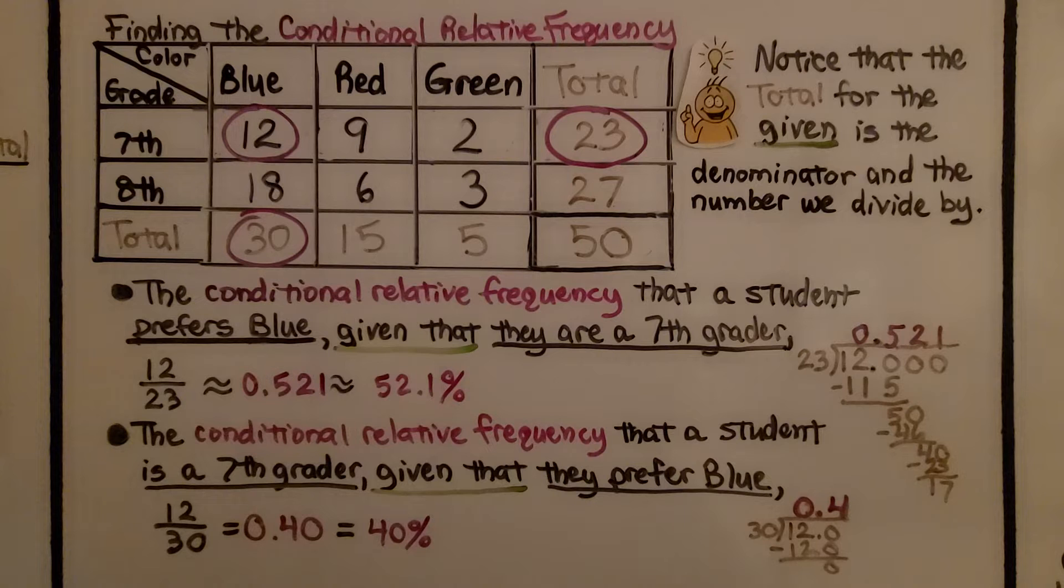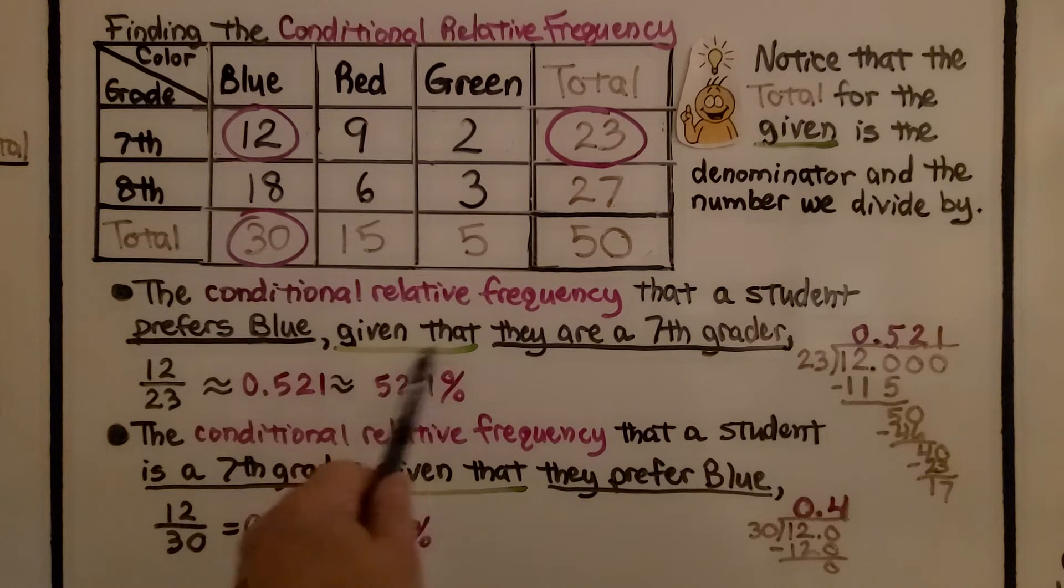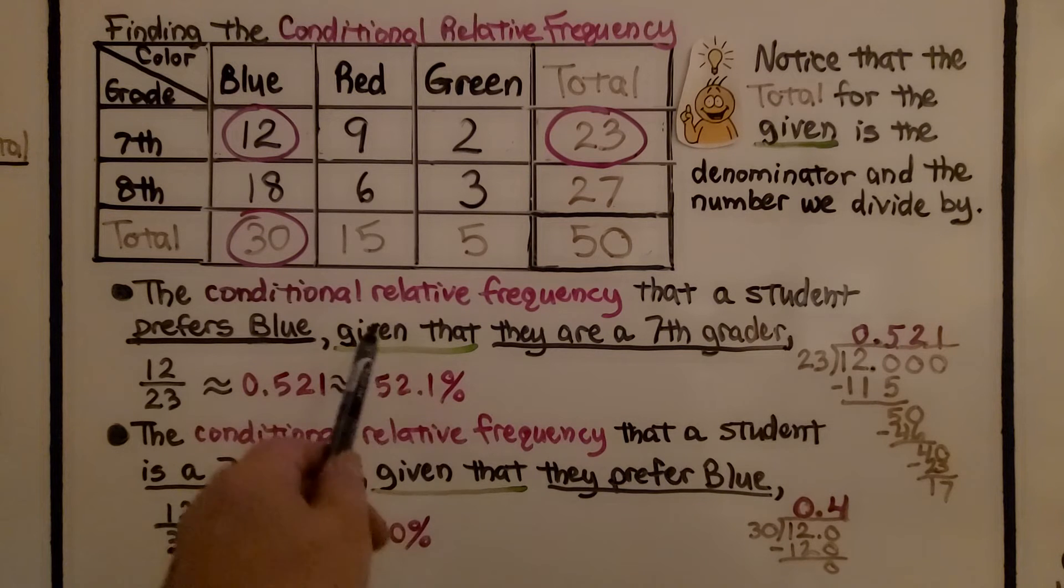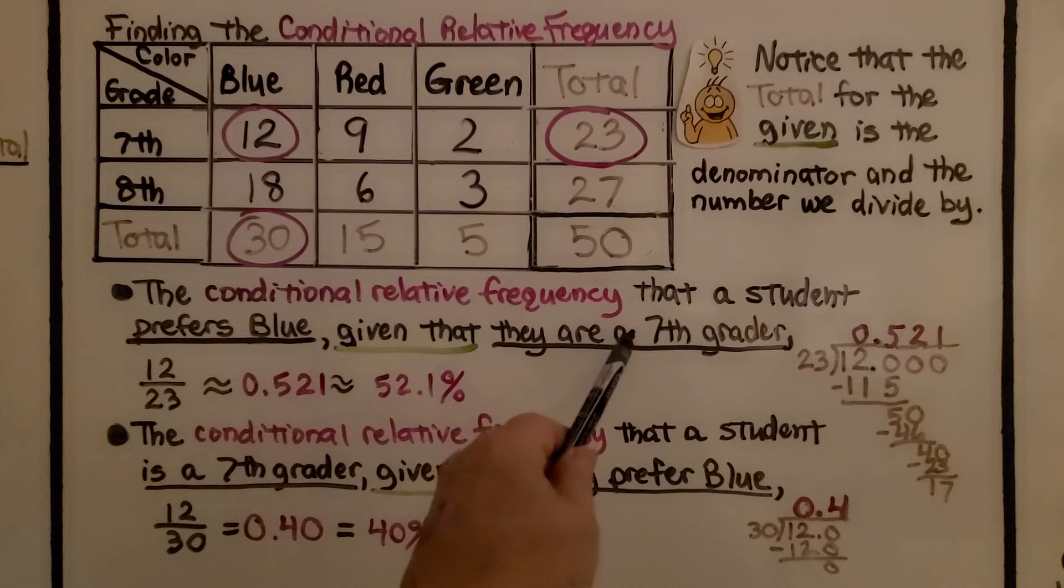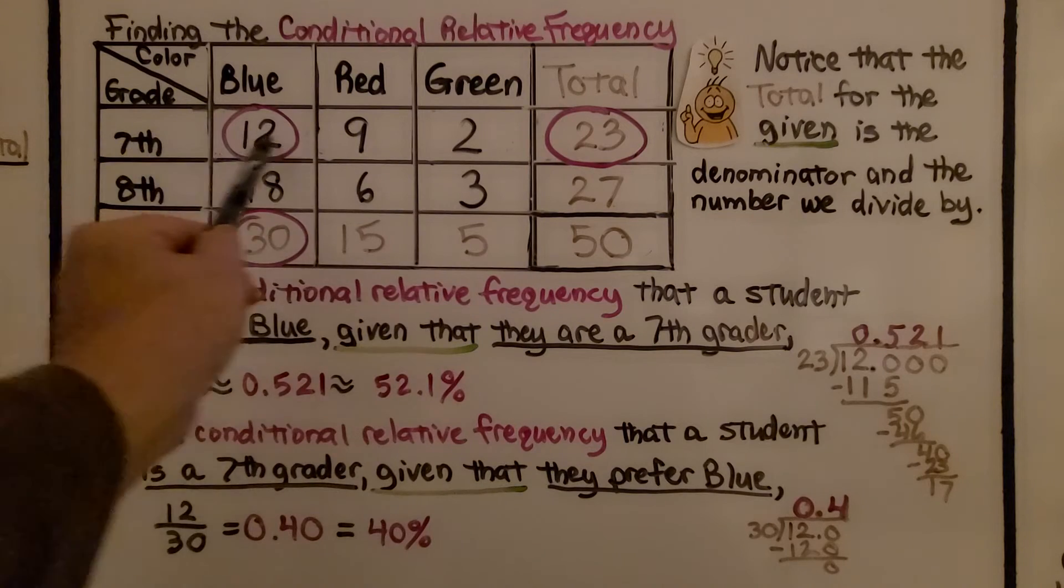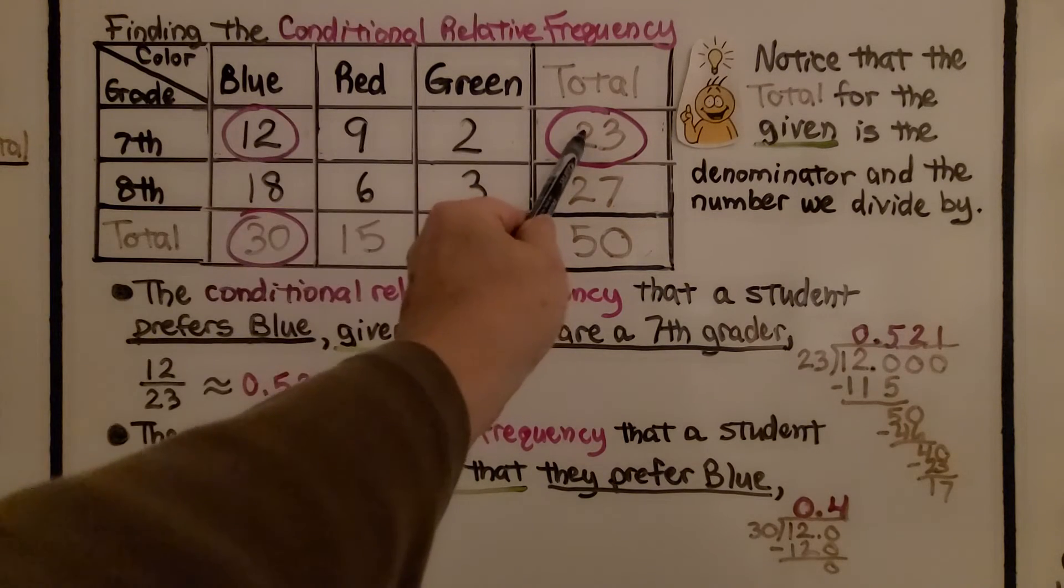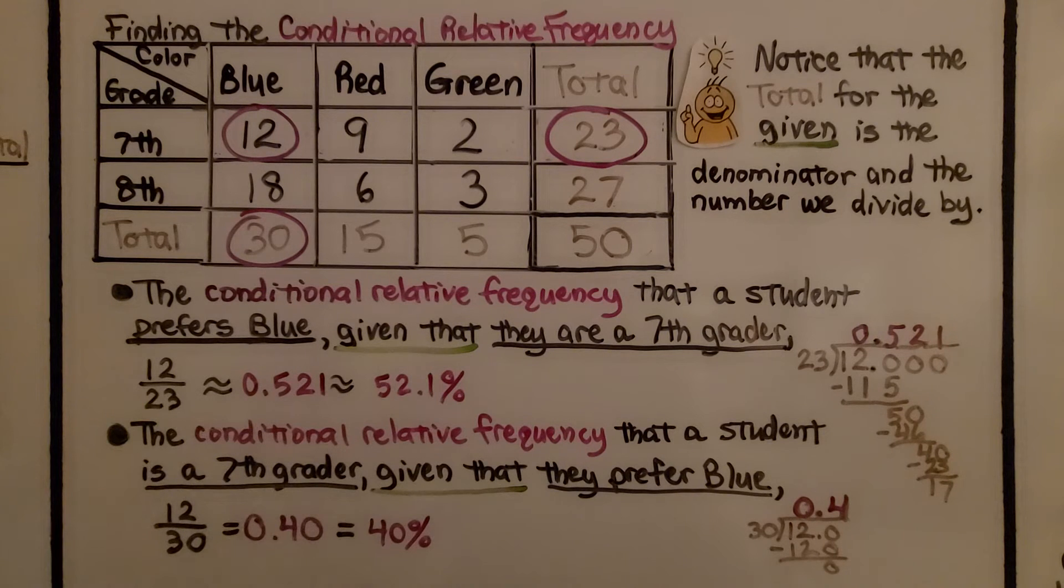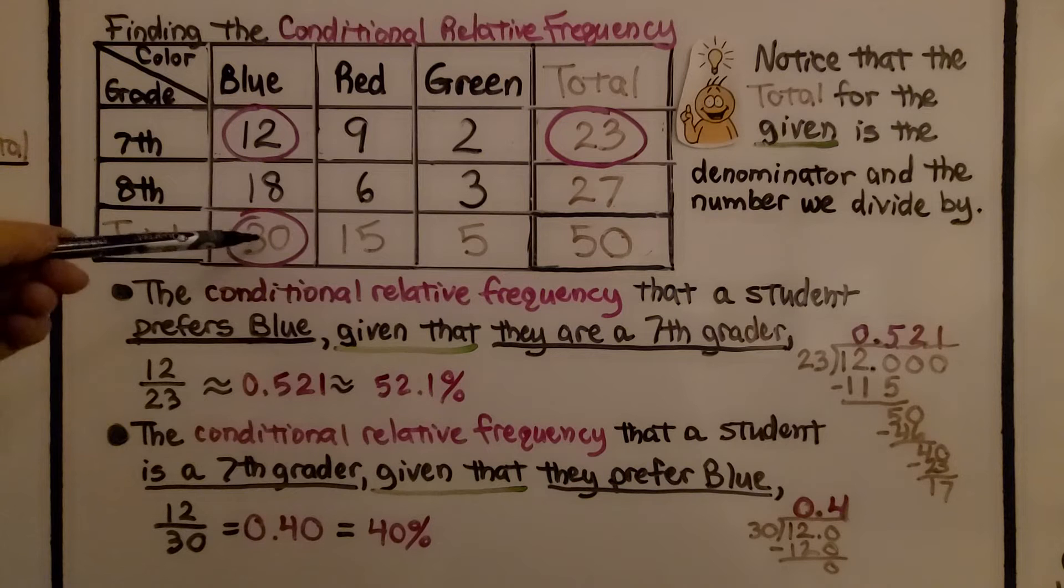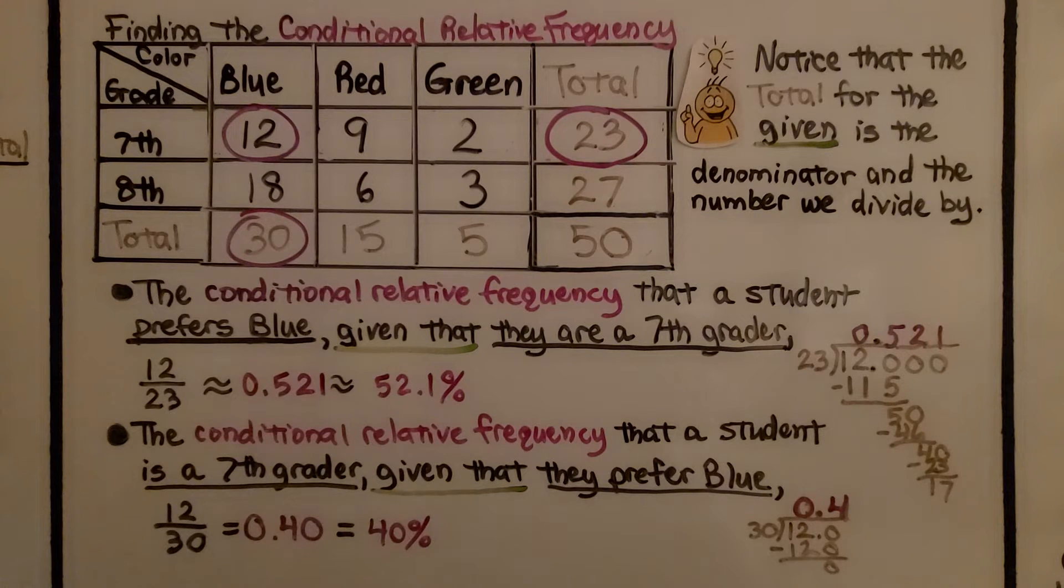Just notice that the total for the given is the denominator. So it says, given that they're seventh graders, well then, coming off a seventh grader, that total for all the seventh graders is going to be the denominator. When it said that they prefer blue, then we come down blue, and that thirty is going to be our denominator.